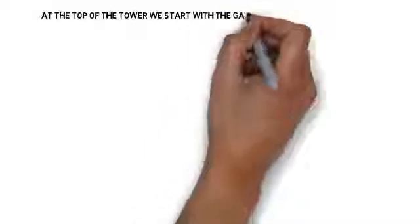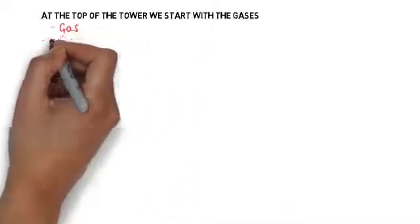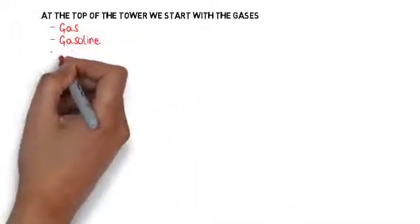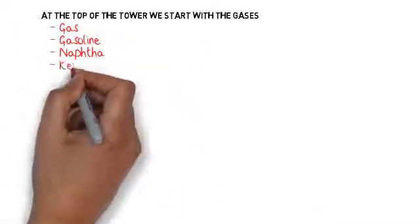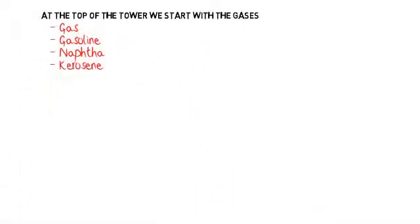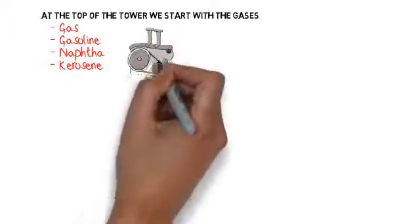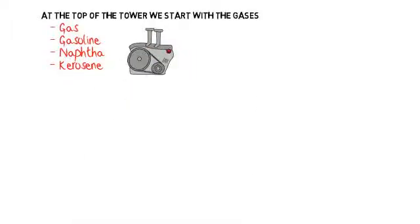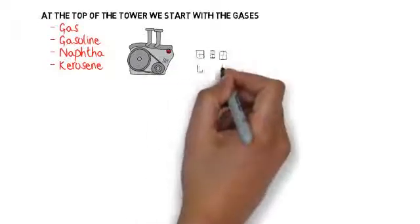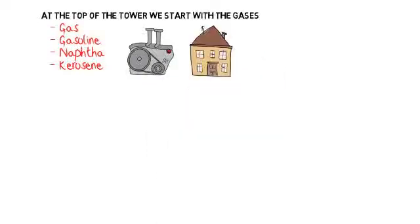For example, at the top of the tower we start with the gases. So gas, gasoline, naphtha and kerosene are all products that are distilled in the beginning. These can be used as fuel for engines and homes.